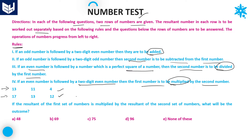Based on those rules we have to solve the problem. The first set is 13 and 11. 13 is an odd number followed by 11, a two-digit odd number. According to rule 2, the second number is subtracted from the first: 13 minus 11 equals 2.